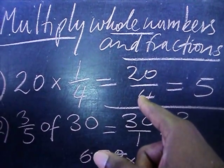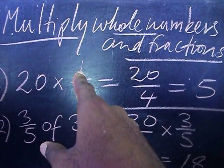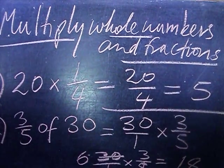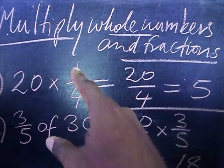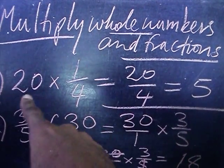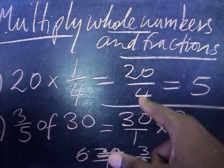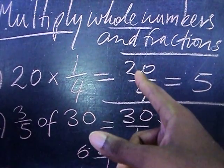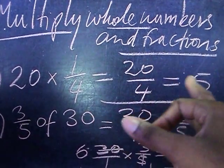Multiply the whole number by the numerator. So 20 multiplied by 1 is 20 over 4, and of course 4 into 20, you reduce that. 4 into 20 is 5. That's your answer.